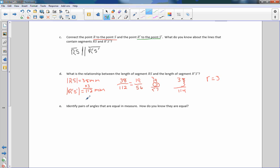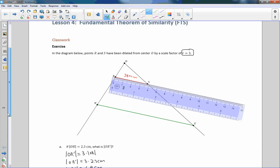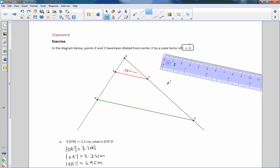Okay. So E, it says, identify pairs of angles that are equal in measure, and how do you know that they are equal? So if I come back here and I move this out of the way, all right, what angle measures are we looking at? We're looking at angle SRR prime.